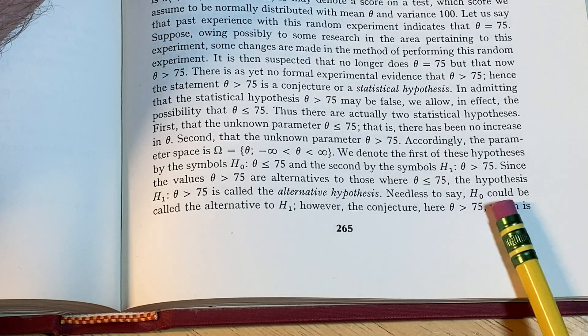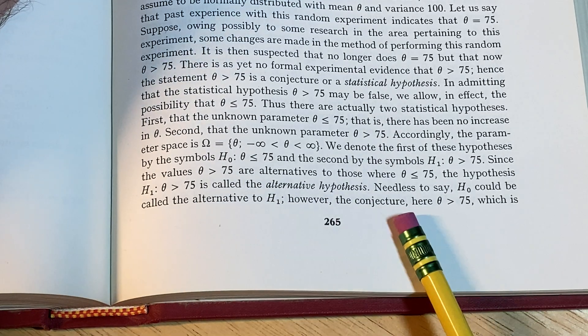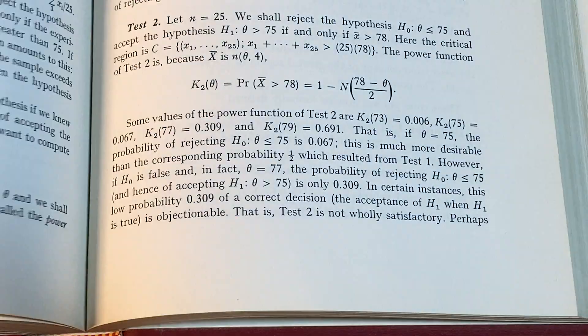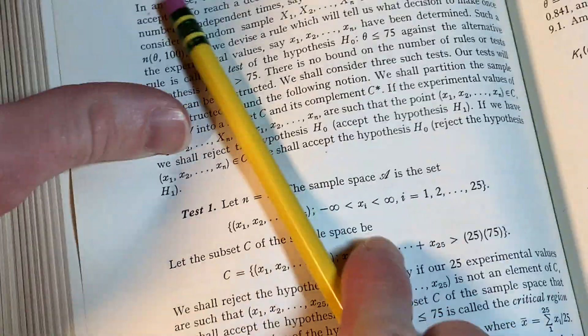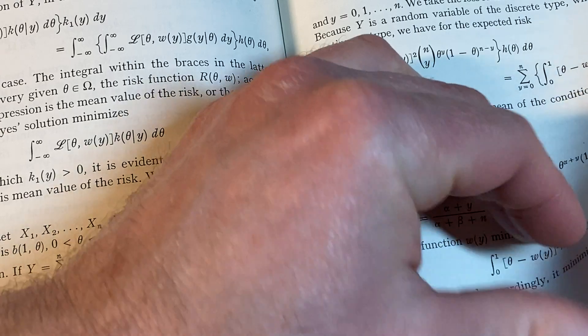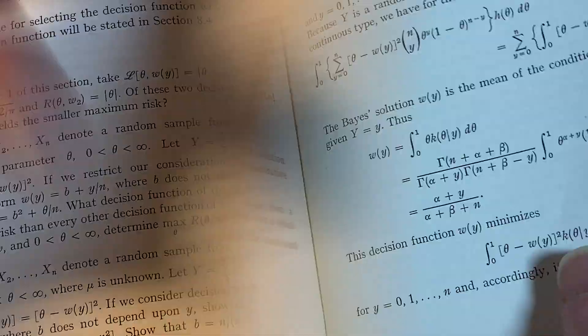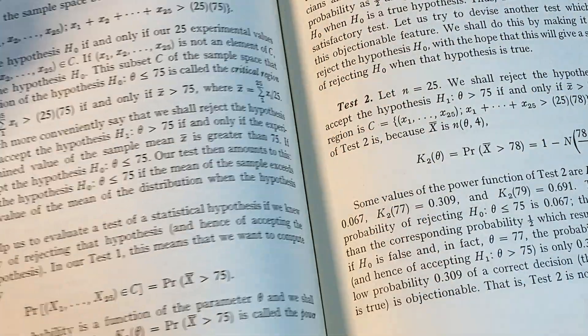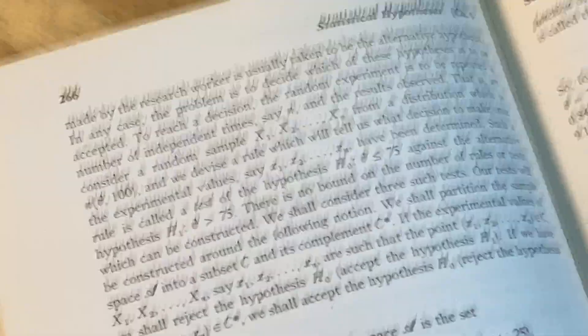Needless to say, H₀ could be called the alternative to H₁. However, the conjecture here, θ > 75 - I think I skipped, I lost my page here. Statistical hypotheses, which is, here it is, yep. Let me zoom in here so you can see a little bit better.